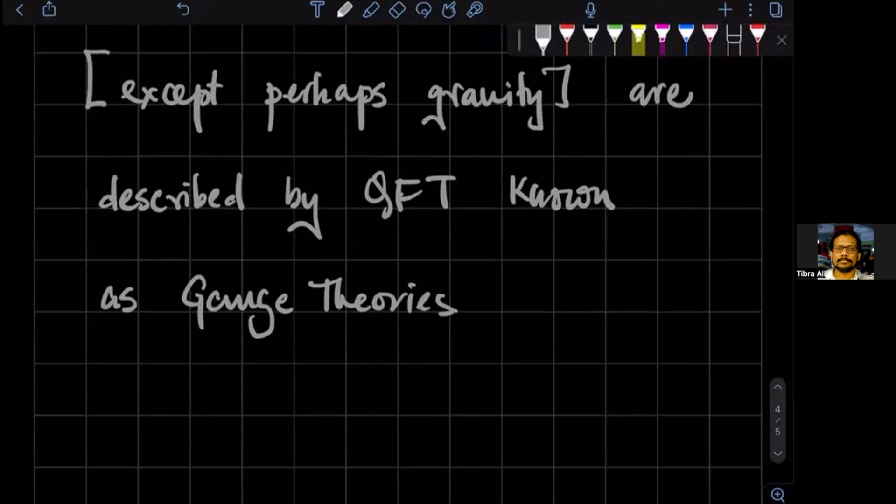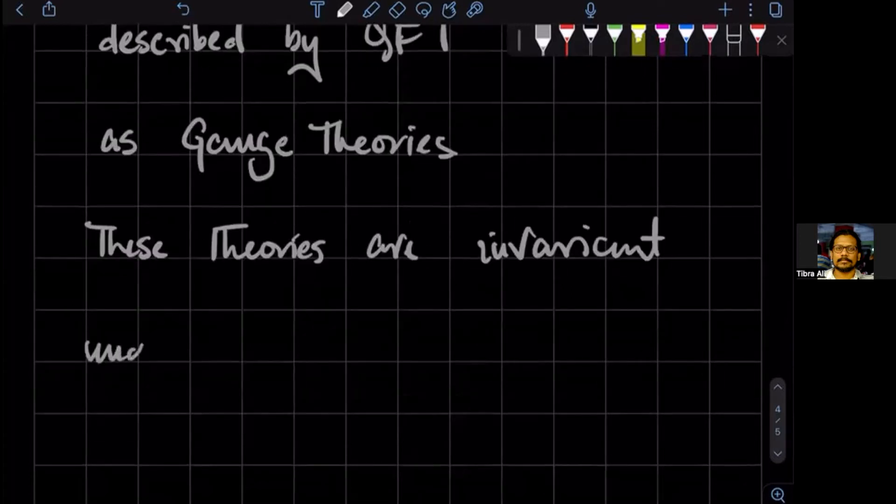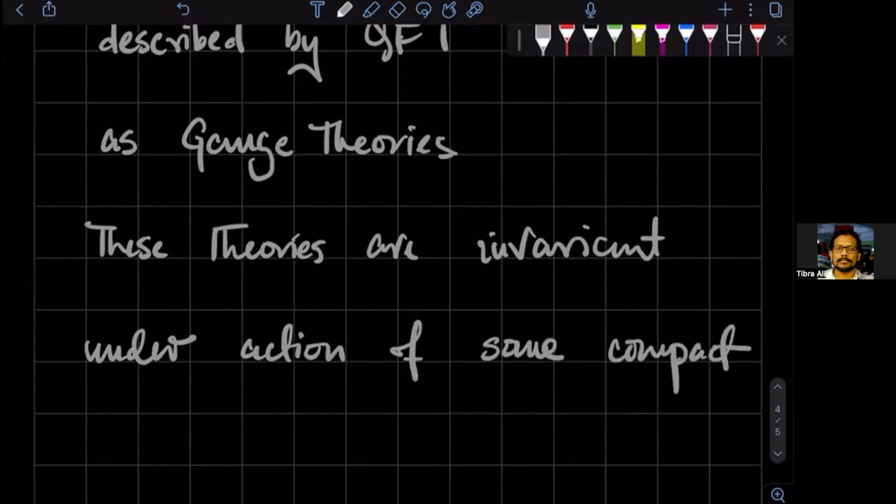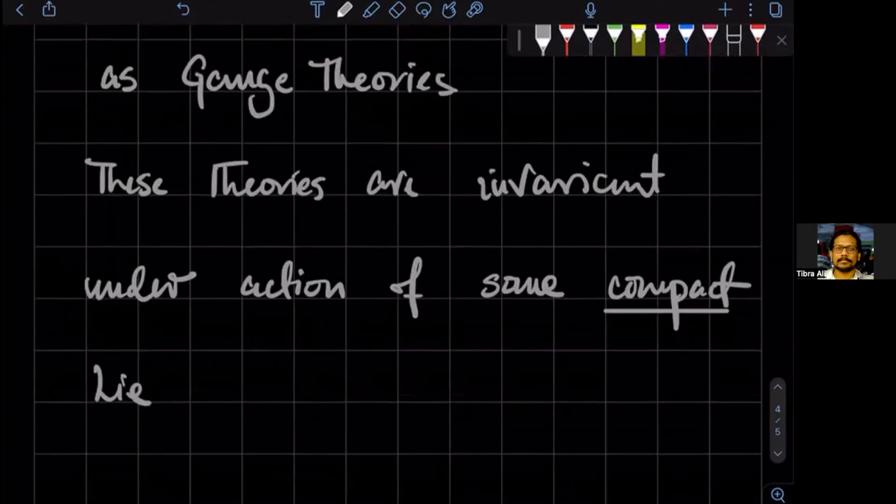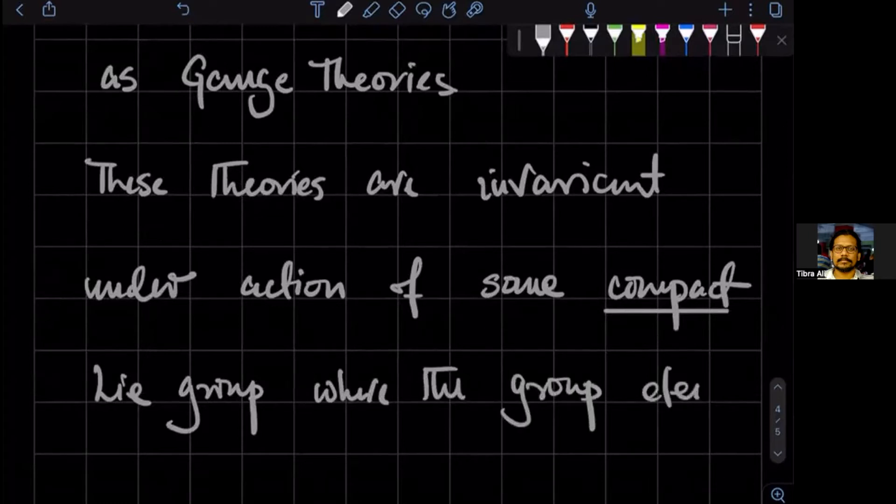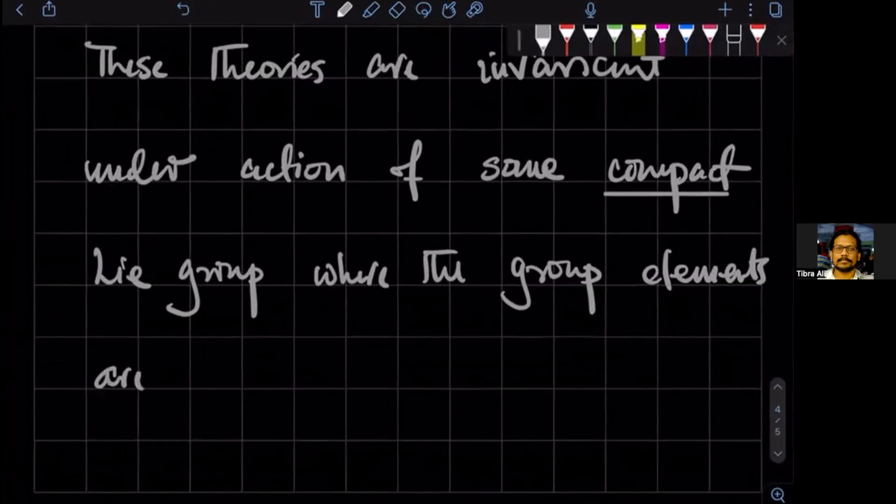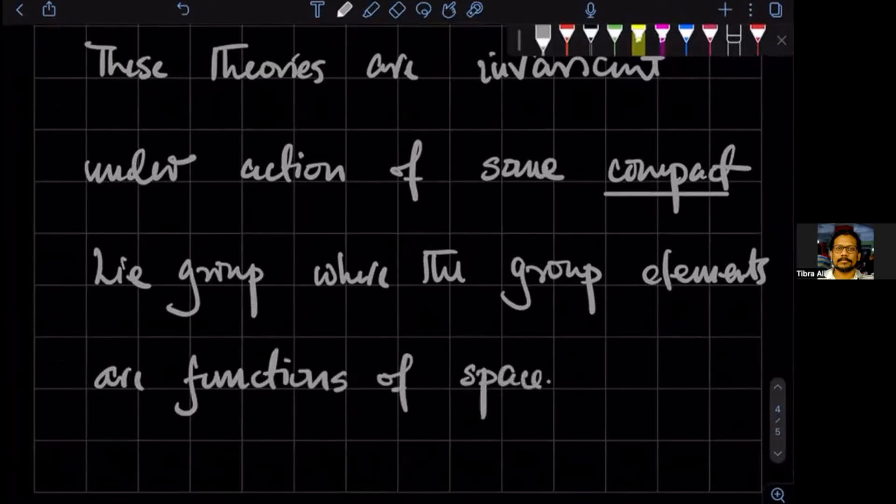So gauge theories, these theories are invariant under action of some compact Lie group. I'll tell you what compact means when the time comes. Lie group, compact Lie group, where the group elements are functions of space time. Okay, that's what the gauge means.